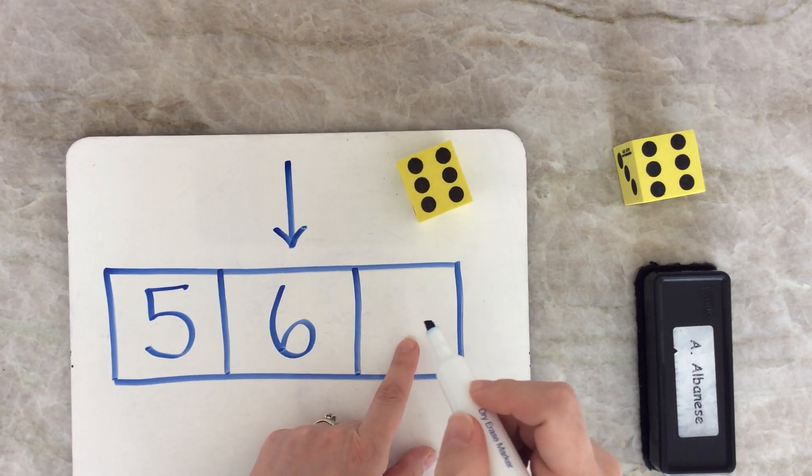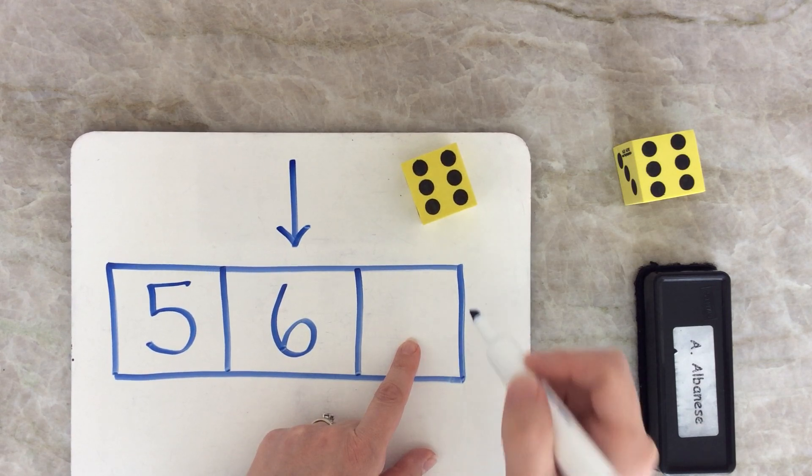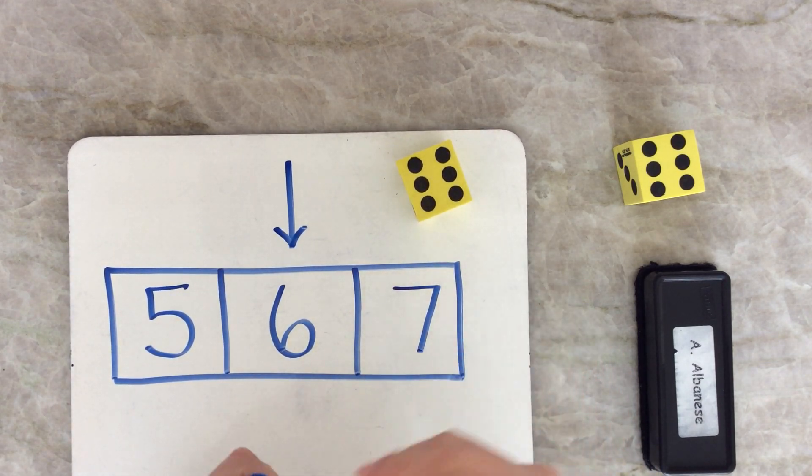What number comes after six? That's right, it's seven. Let's try it again.